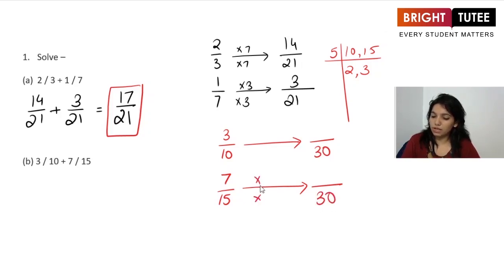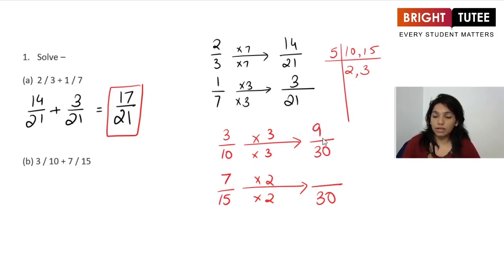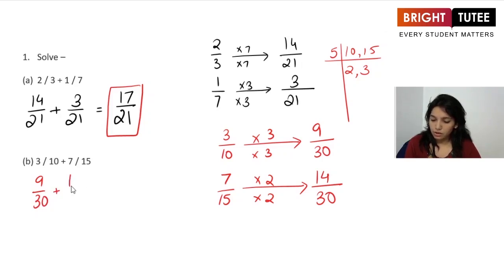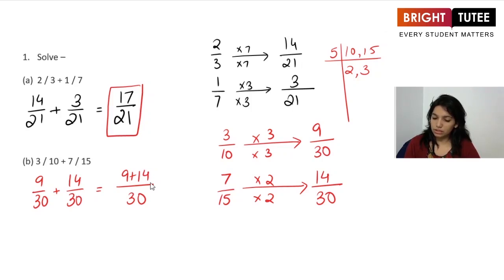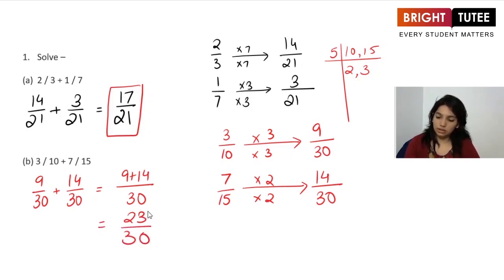With LCM 30: 15 times 2 gives 30 and 10 times 3 gives 30. So the numerators become 9 and 14. Writing it out: 9/30 plus 14/30. Adding the numerators, 9 plus 14 is 23, so the answer is 23/30.